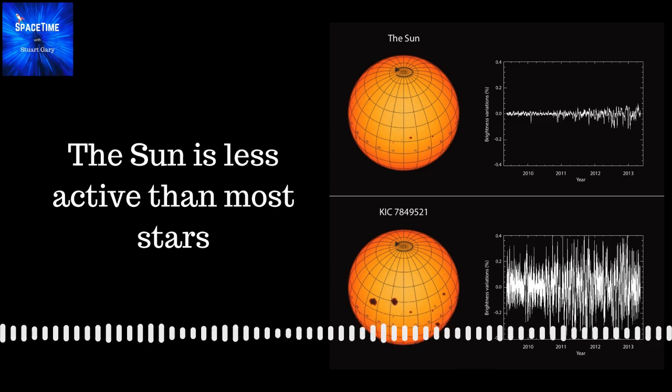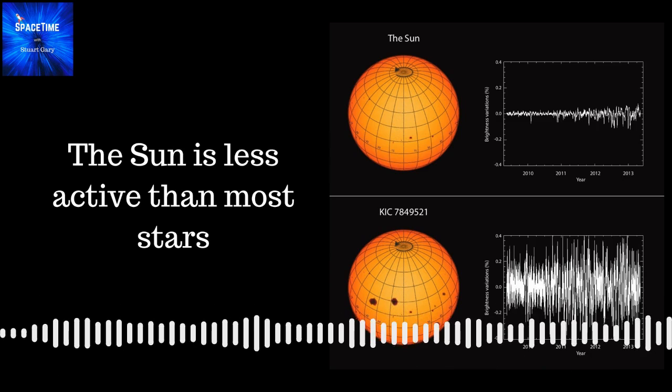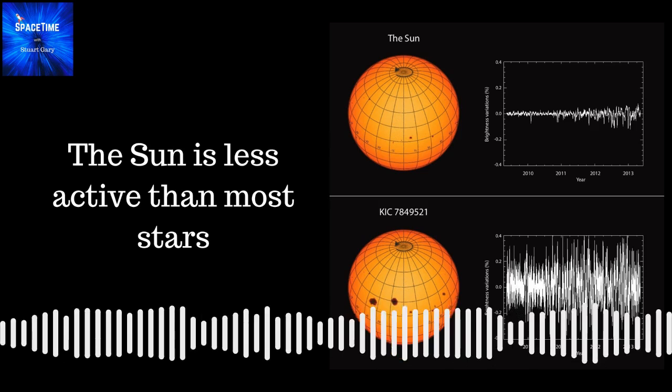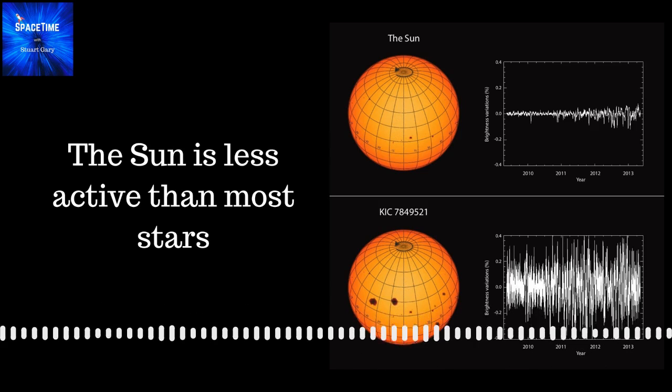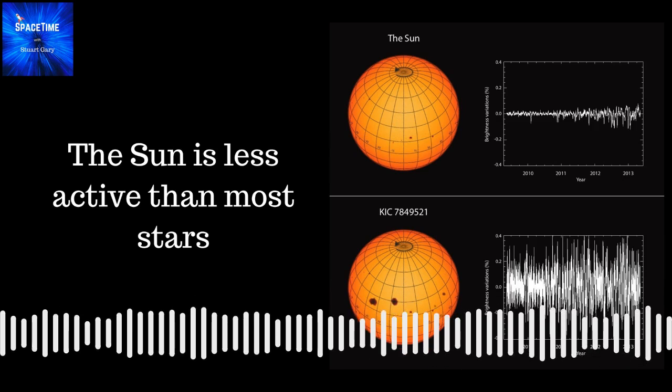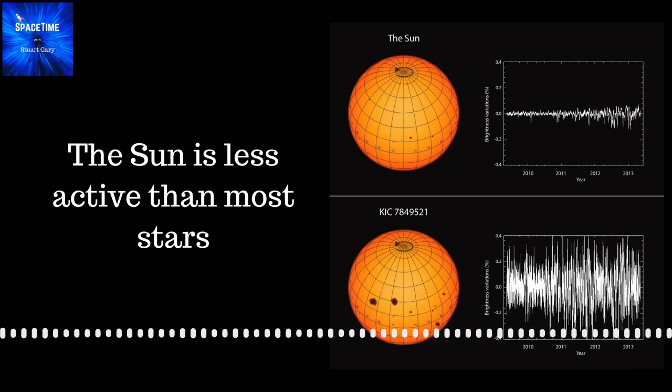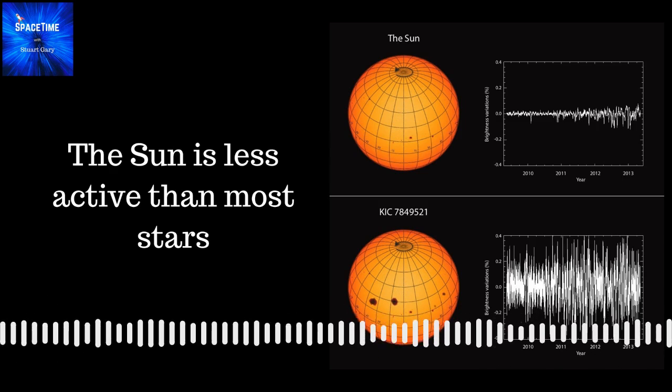That might be a good thing for life, I guess. It might be a good thing for life, yeah. There's a few factors in here. We're looking at star spots, which are correlated with flares, but aren't necessarily identical to flares in terms of the current. But the calmer the star is, that's probably better for life, the more stable it is.